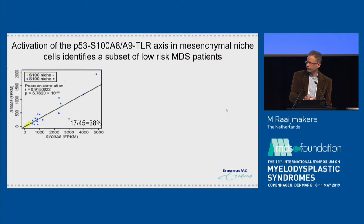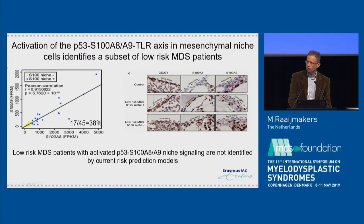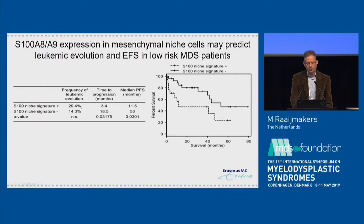Is this relevant for human MDS? This is showing, in a cohort of low-risk MDS patients, niche cell expression of S100A8 and A9. There is a subset of these patients that overexpress S100 in their niche, confirmed at the protein level where some patients have quite high expression of S100 in these endothelial niche cells. Importantly, these low-risk MDS patients with this niche inflammatory profile were not discernible using our standard prognostic parameters — IPSS and IPSS-R. Yet we did find that if you have this inflammation in the niche, you have a substantially higher chance of leukemic evolution at a much shorter interval, reflected in reduced EFS in these patients.